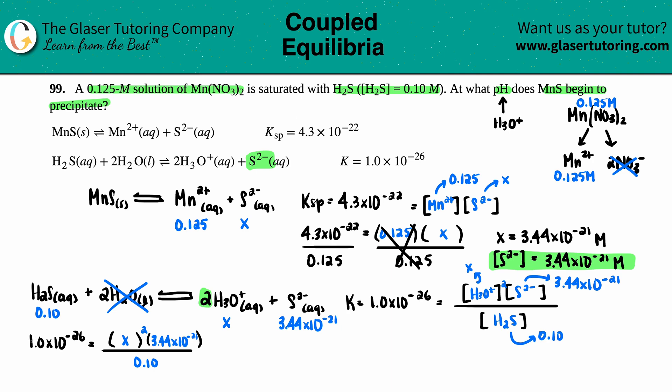Let's cross multiply and then just group the numerator. So it would be 1.0 times 10 to the negative 27th equals 3.44 times 10 to the negative 21st X squared. Divide by that number on both sides. We're just trying to get X by itself.